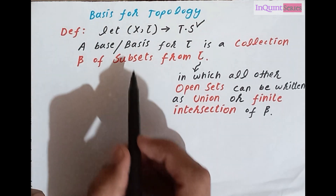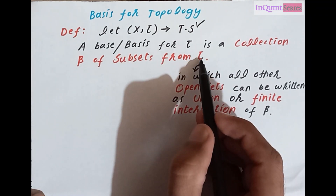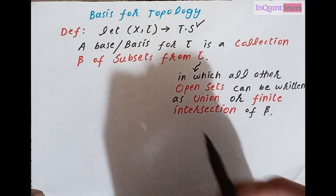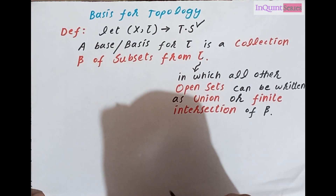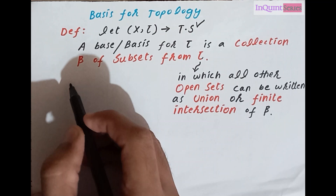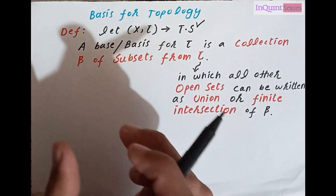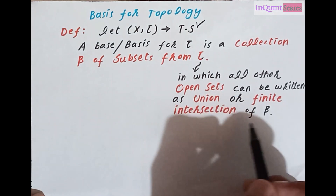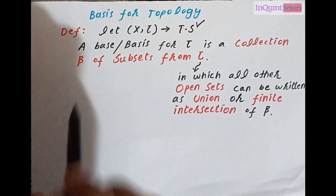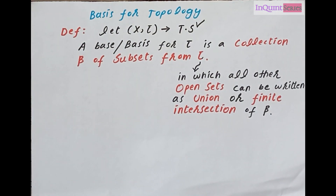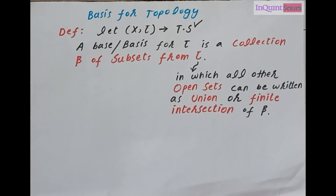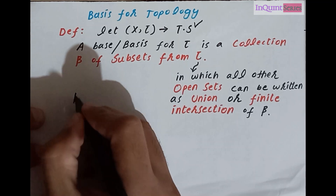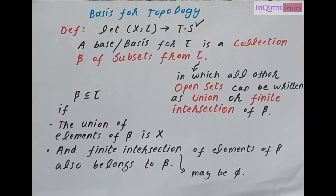We can understand this definition as: we have a topological space x, and we define a collection tau of open sets. Other open sets, other than these subsets of beta, can be expressed using elements of beta. That is basically the definition of basis for topology. We can also state the definition in terms of a subcollection of tau.